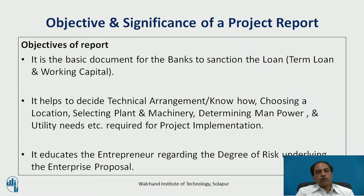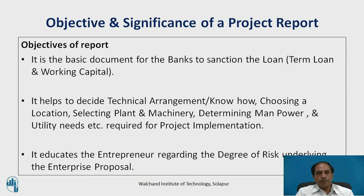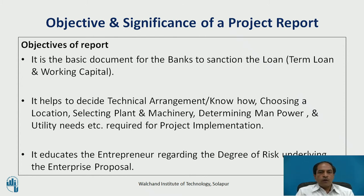The next objective is it helps to decide the technical arrangement or know-how, choosing a location, selecting plant and machinery, determining manpower and utility needs required for project implementation. A project has four major aspects: production, marketing, finance, and HR. We have to judge whether we are capable of dealing with all four areas — whether we have enough technology, enough marketing arrangement, whether we can manage skilled and managerial manpower, and whether we can manage the finance. These are the four pillars of business, and the project report must establish the details and viability of each.